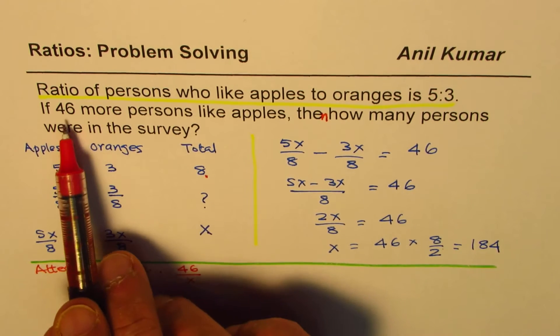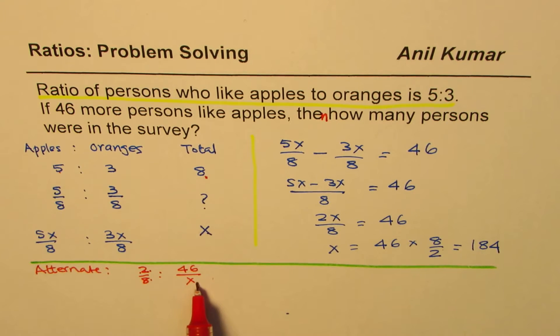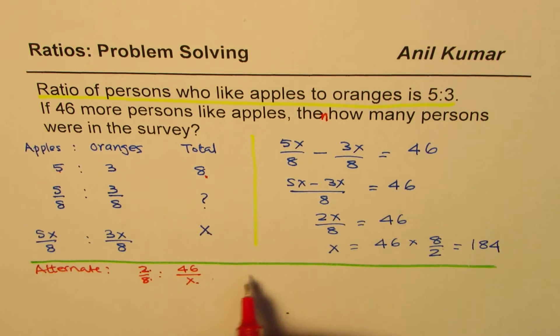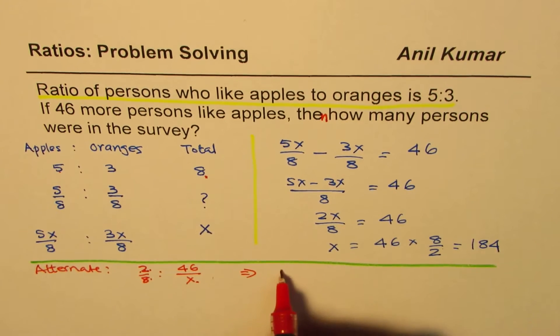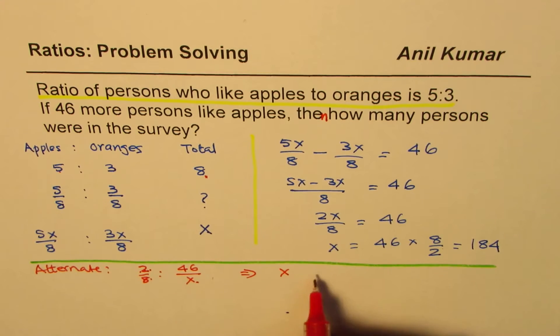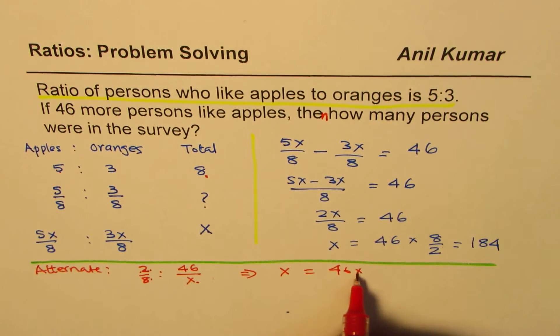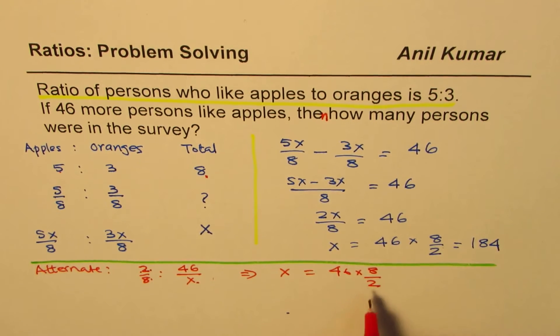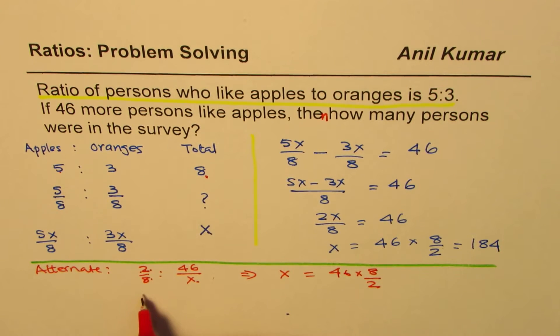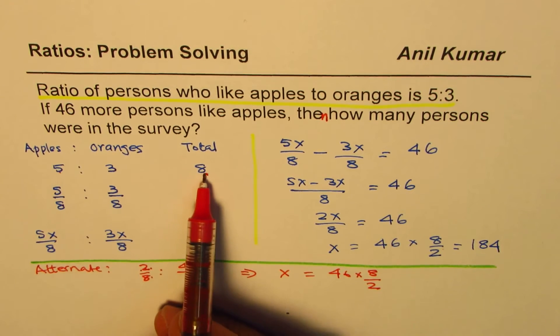And we are given 46 more persons out of how many? This is what we need to find. So that gives you the answer. That is X is equals to, just cross multiply, 46 times 8 over 2. Purposely I am not writing 1 over 4 because I want to maintain this fraction. 2 out of 8.